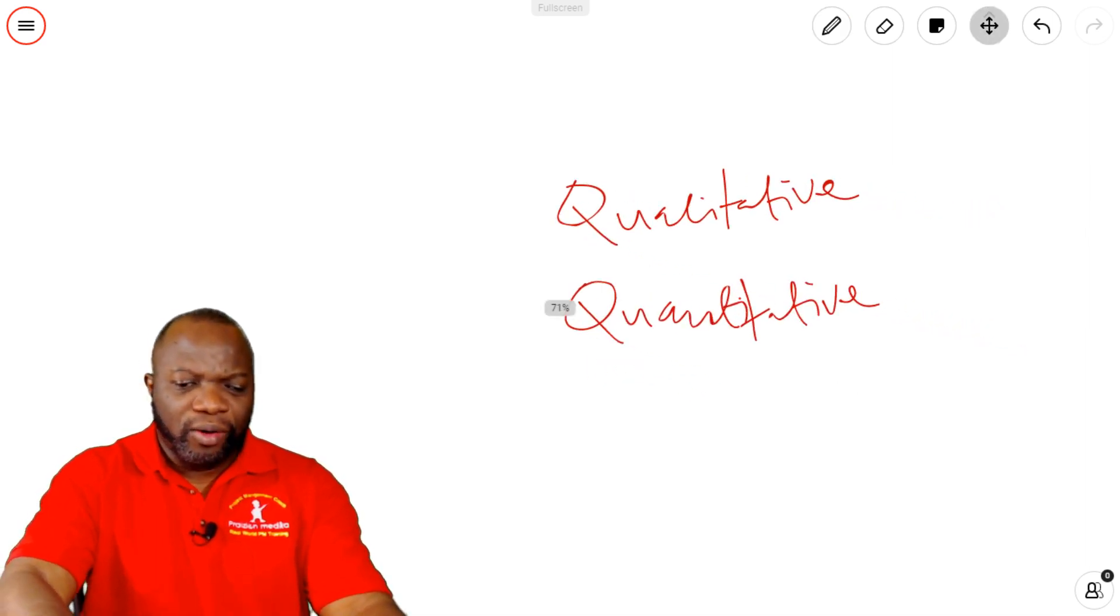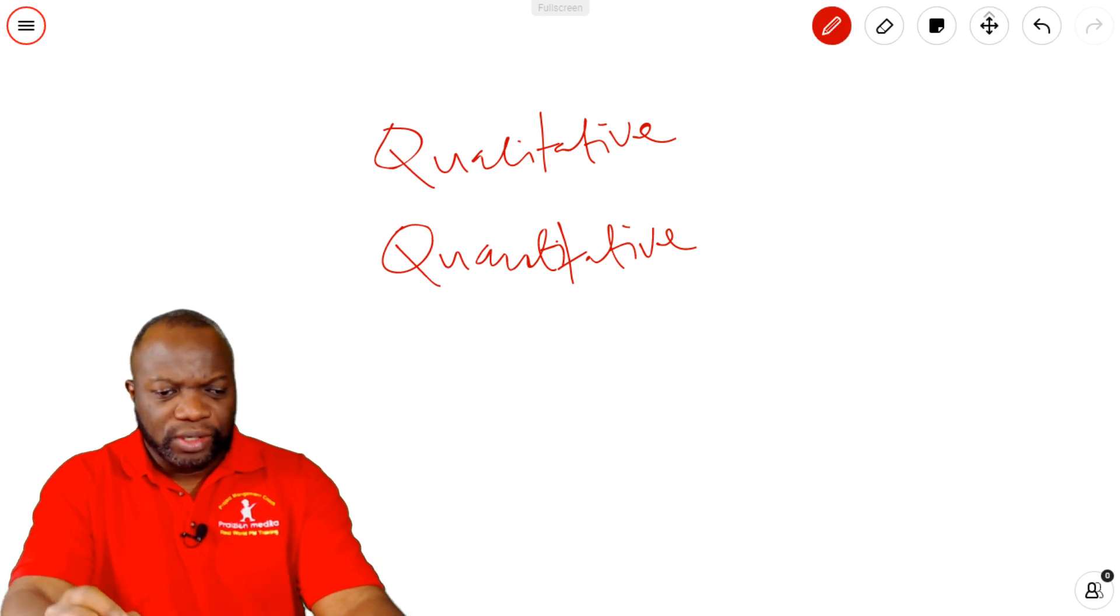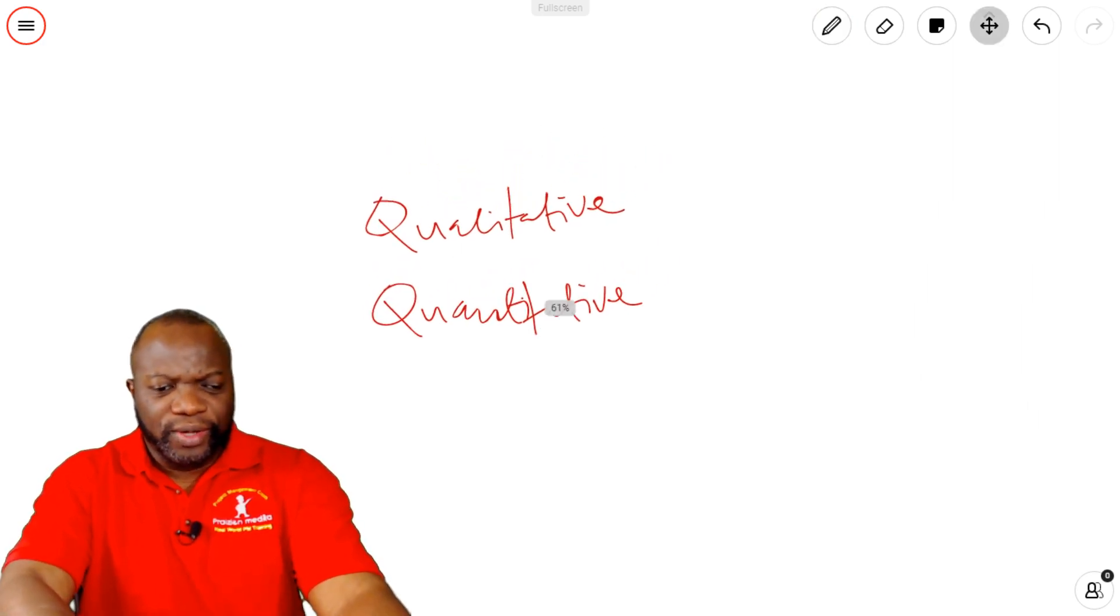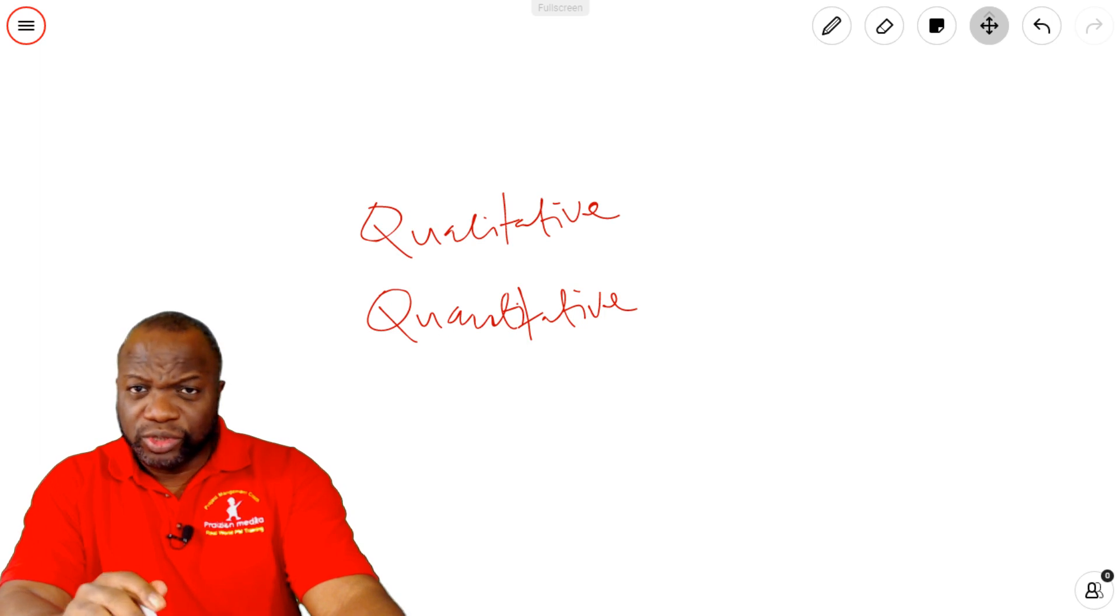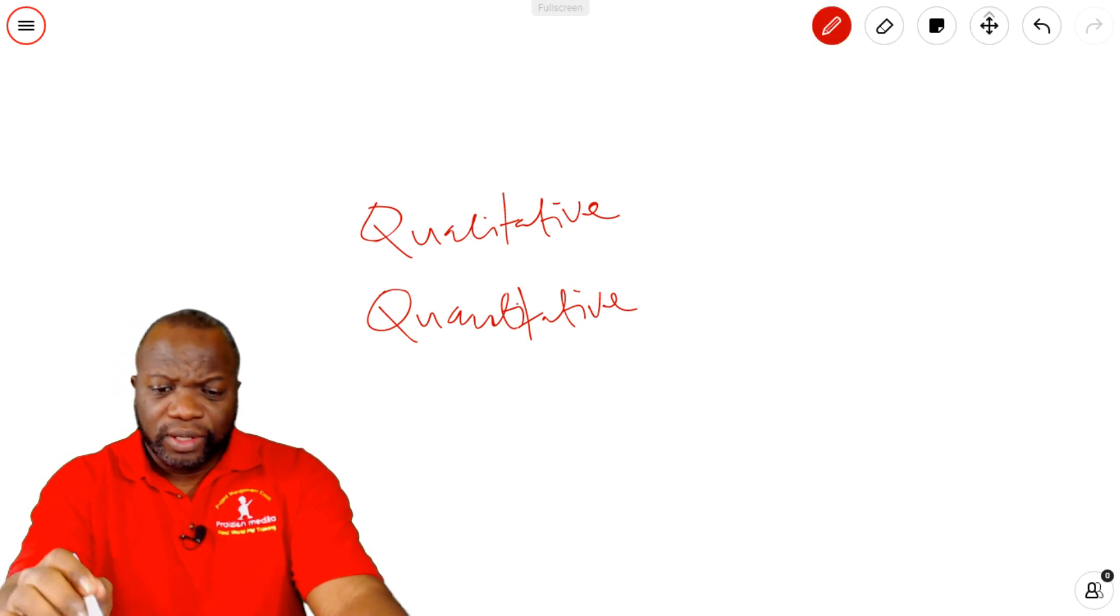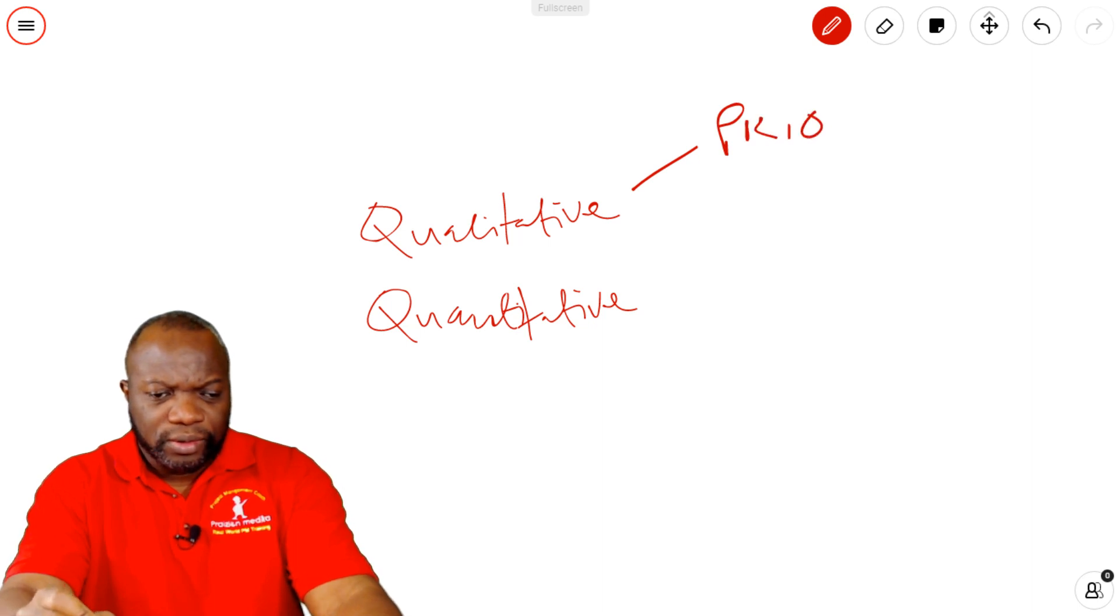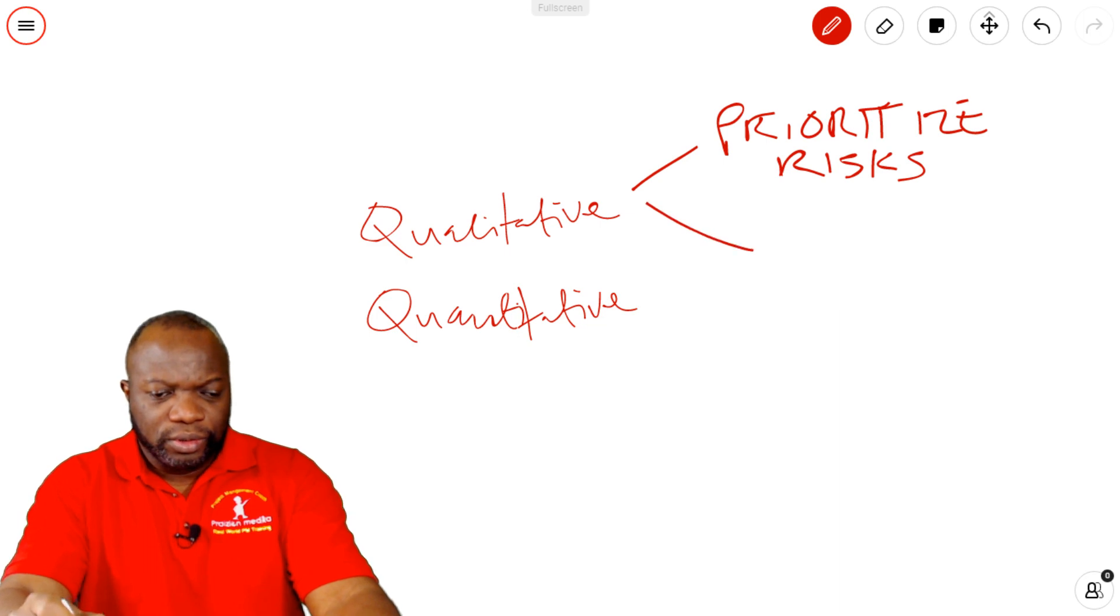So when you think about qualitative risk analysis, what you are aspiring to do here is different from what you're trying to do in quantitative. In qualitative, you're trying to prioritize. That is your major goal. You're trying to prioritize the risks. You're also going to categorize the risks, primarily.